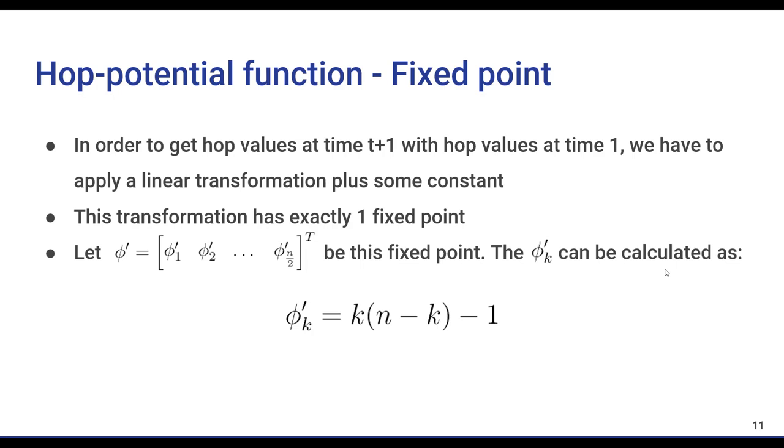Also, due to how we've defined the hop functions, phi_k will always be equal to phi_(n-k), since if two nodes are a distance of k away from each other, they are also a distance of n minus k away from each other, if you look at it from the other side. This is the reason we are only interested in the first half of them, which are phi_1 until phi_(n/2).